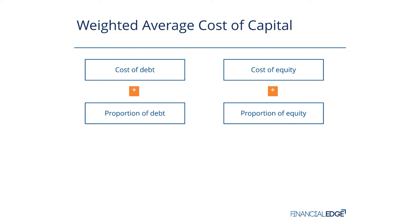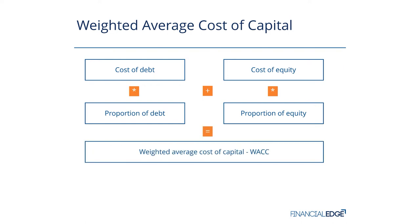What's the average of all of these? If I take my cost of debt times the proportion, take my cost of equity times the proportion, and add them together — i.e., half my funding costs me 5% and half my funding costs me 10% — I'll get my WACC, or weighted average cost of capital, of 7.5%.